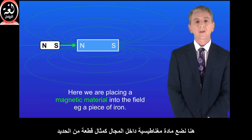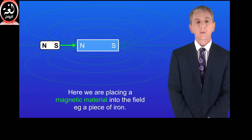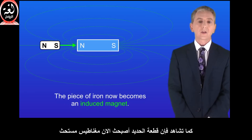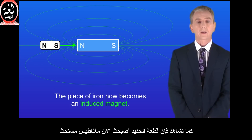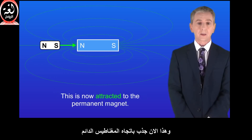Here we're placing a magnetic material into the field — for example, a piece of iron. As you can see, the piece of iron now becomes an induced magnet, and this is now attracted to the permanent magnet.